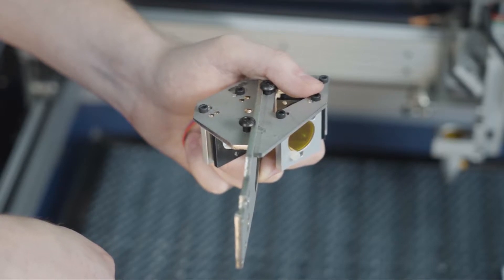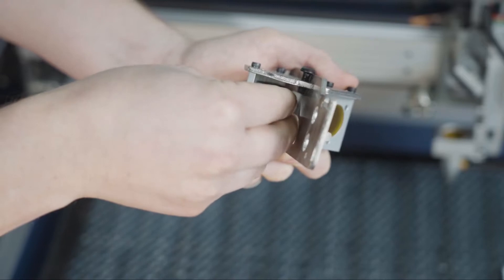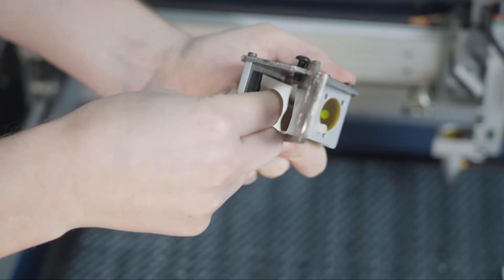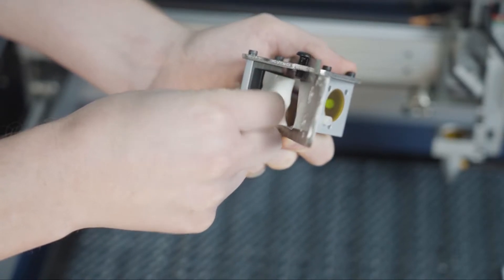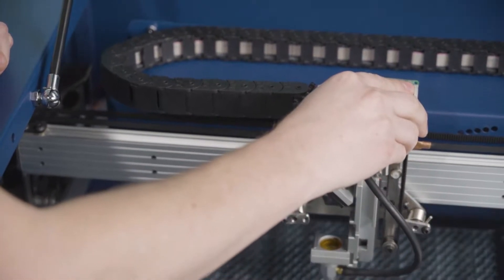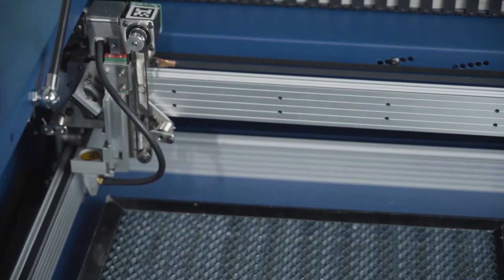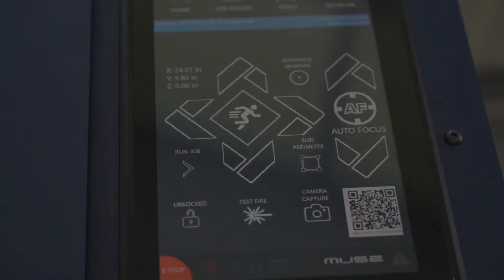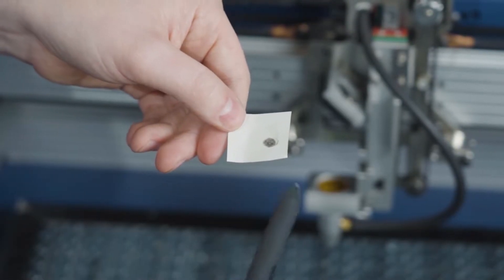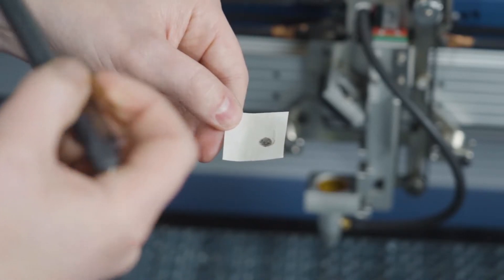Mirror one is located all the way to the left on the back side of the gantry. Take a piece of thermal paper and stick it to that mirror. Make sure you press it down so you get an impression of the mirror. Position your laser head so it's all the way in the back left corner of the Titan. Then close the lid and do a test fire. We want to make sure that this dot is positioned in the center of the mirror.